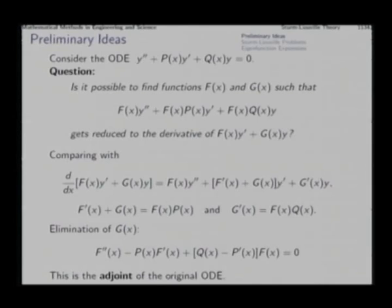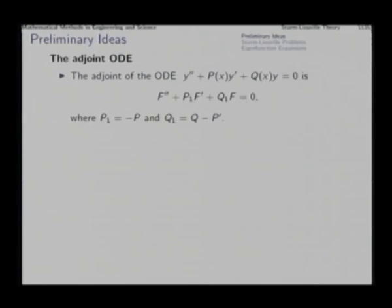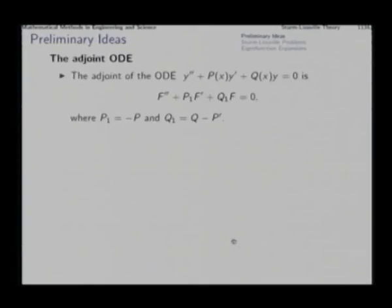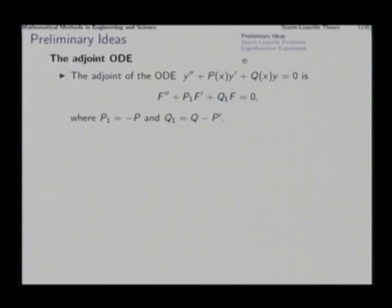The next question is: what are the properties of this adjoint? We have seen that the adjoint of y double prime plus p y prime plus q y equals 0 has coefficients p₁ = −p and q₁ = q − p prime. So this is the adjoint with p₁ equal to minus p and q₁ equal to q minus p prime.